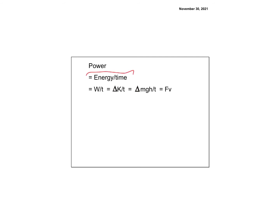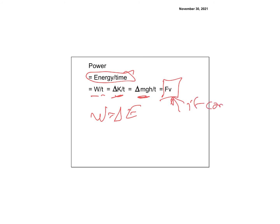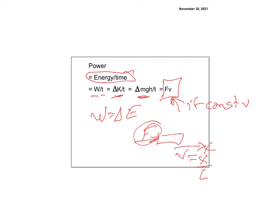Power is energy per time, so it's work per time. Remember, work changes energy. You could also express it as ΔKE or ΔmgΔh over time. One important formula: P = F·v at constant velocity. This comes from the fact that v = x/t, so F·x/t = work/time = power. So F times v equals power.